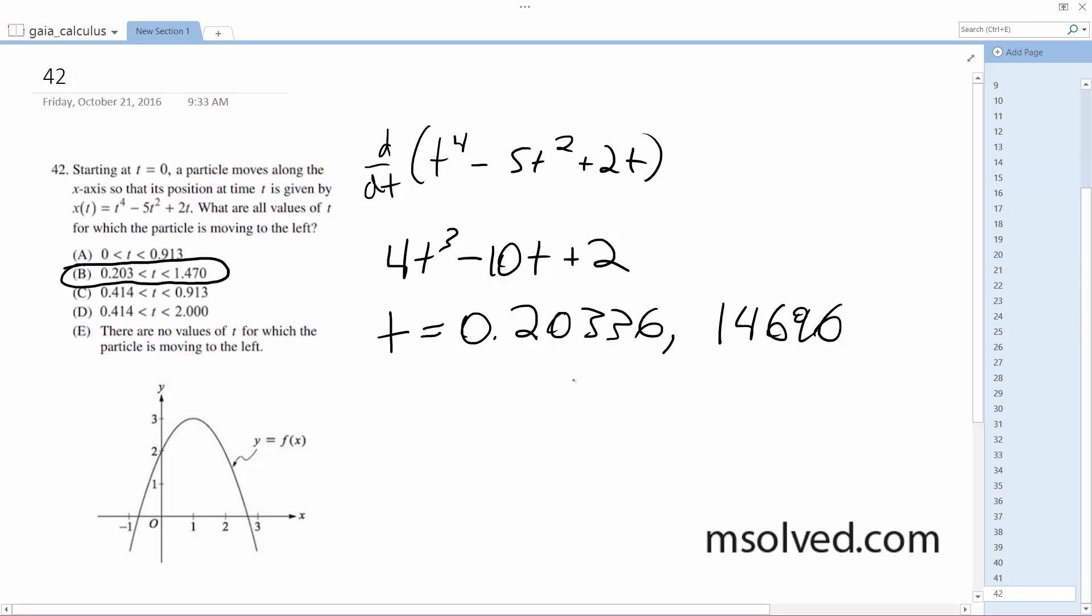If you take the second derivative, you can figure out concave up or concave down. But with these, you just plug them in. You see that it's negative beyond 0.2, and then it becomes positive again. That I should have 1.469. Okay, so it's these two, and the answer is b.